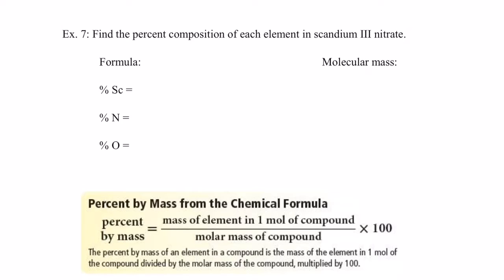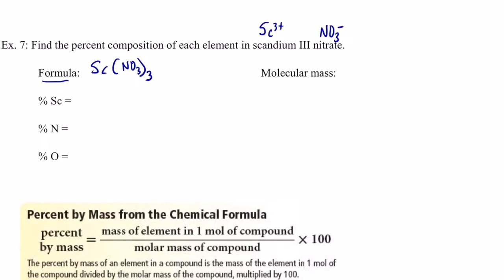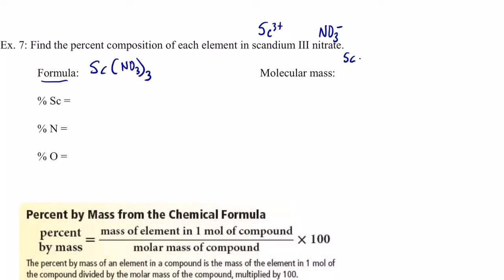Welcome back. For this one, we have to find the formula first, because we need the formula to find the weight of the compound. We have scandium-3, meaning Sc with a 3+ charge, and nitrate, which is the polyatomic ion NO₃ negative. So the formula is Sc(NO₃)₃ — we need three nitrate groups to balance the charge. That means one scandium, three nitrogens, and nine oxygens.